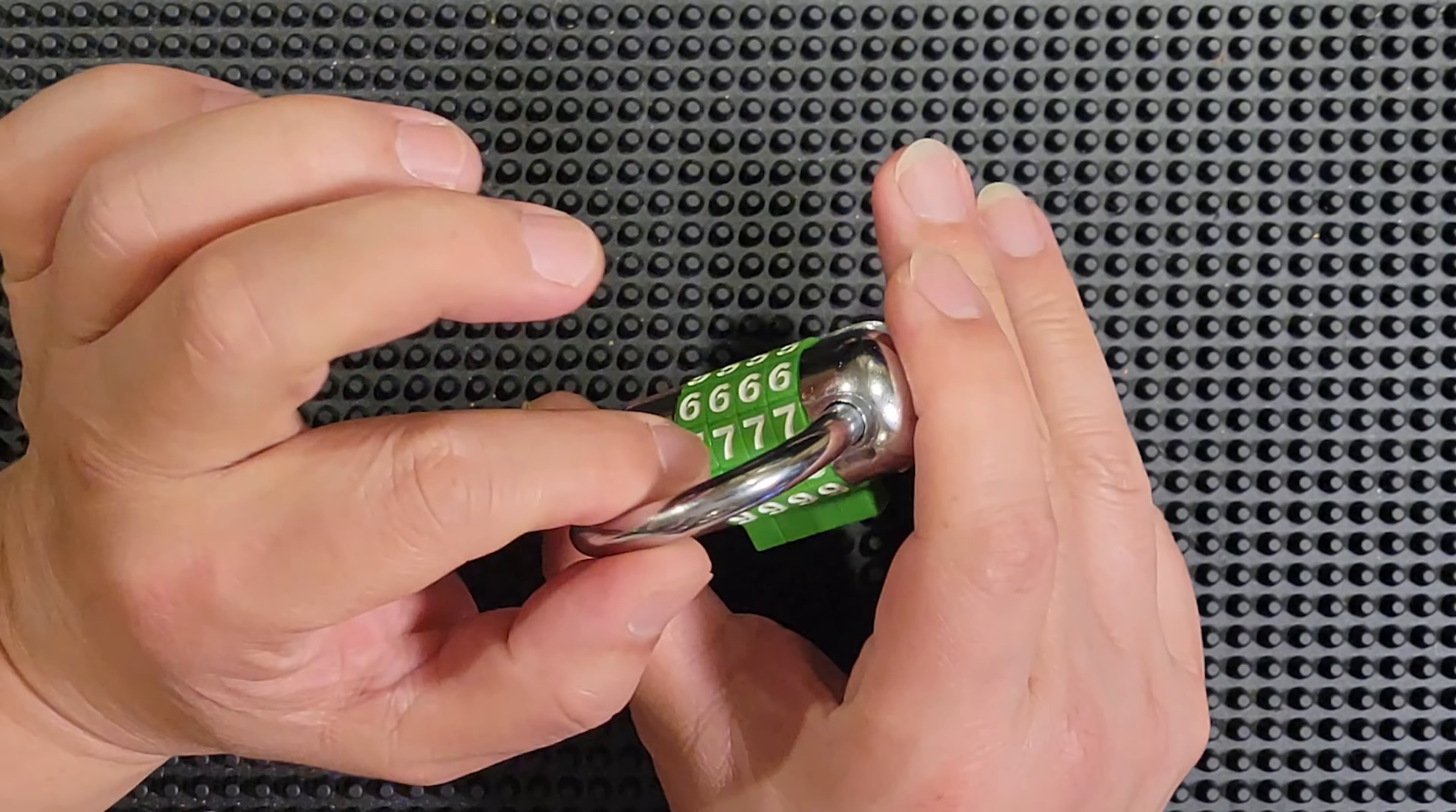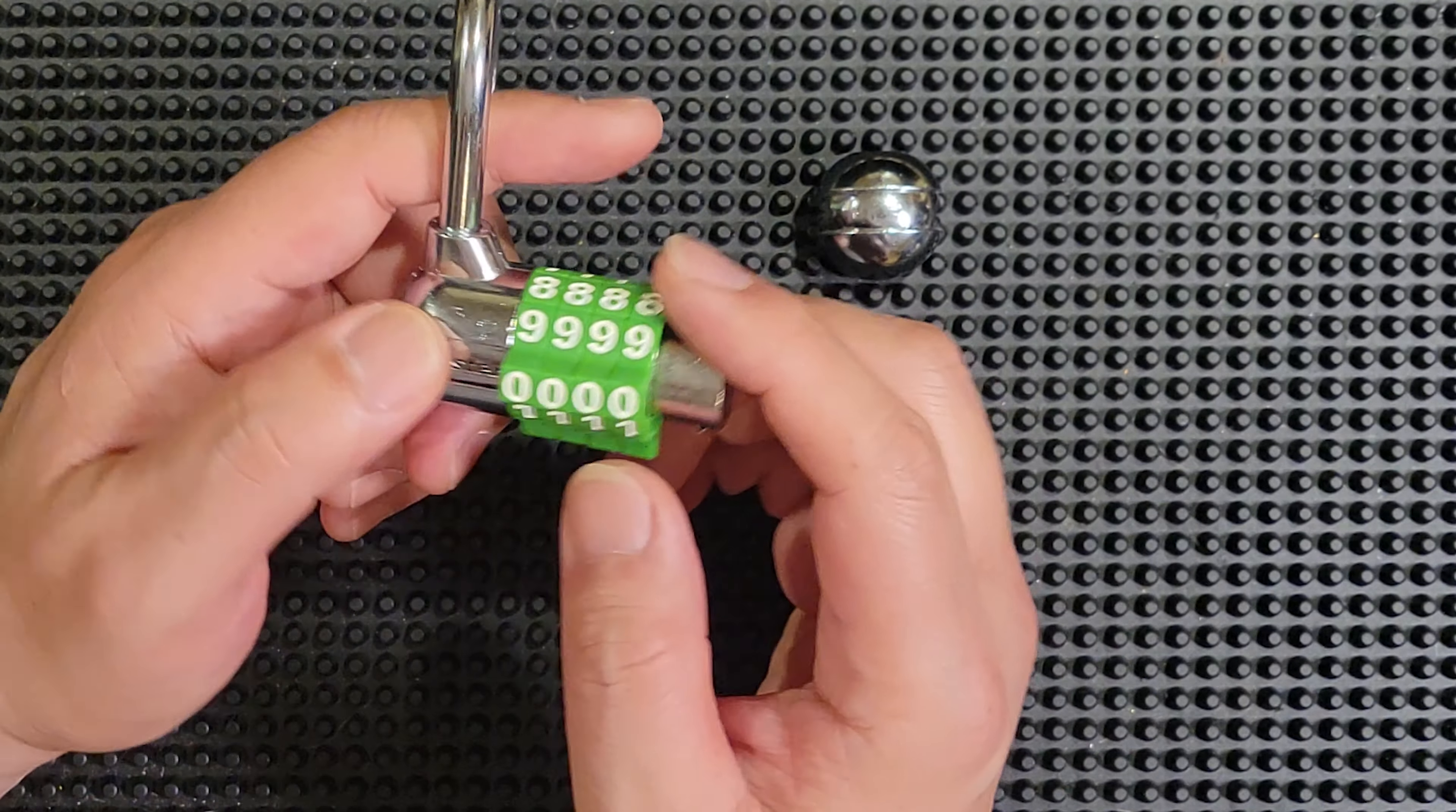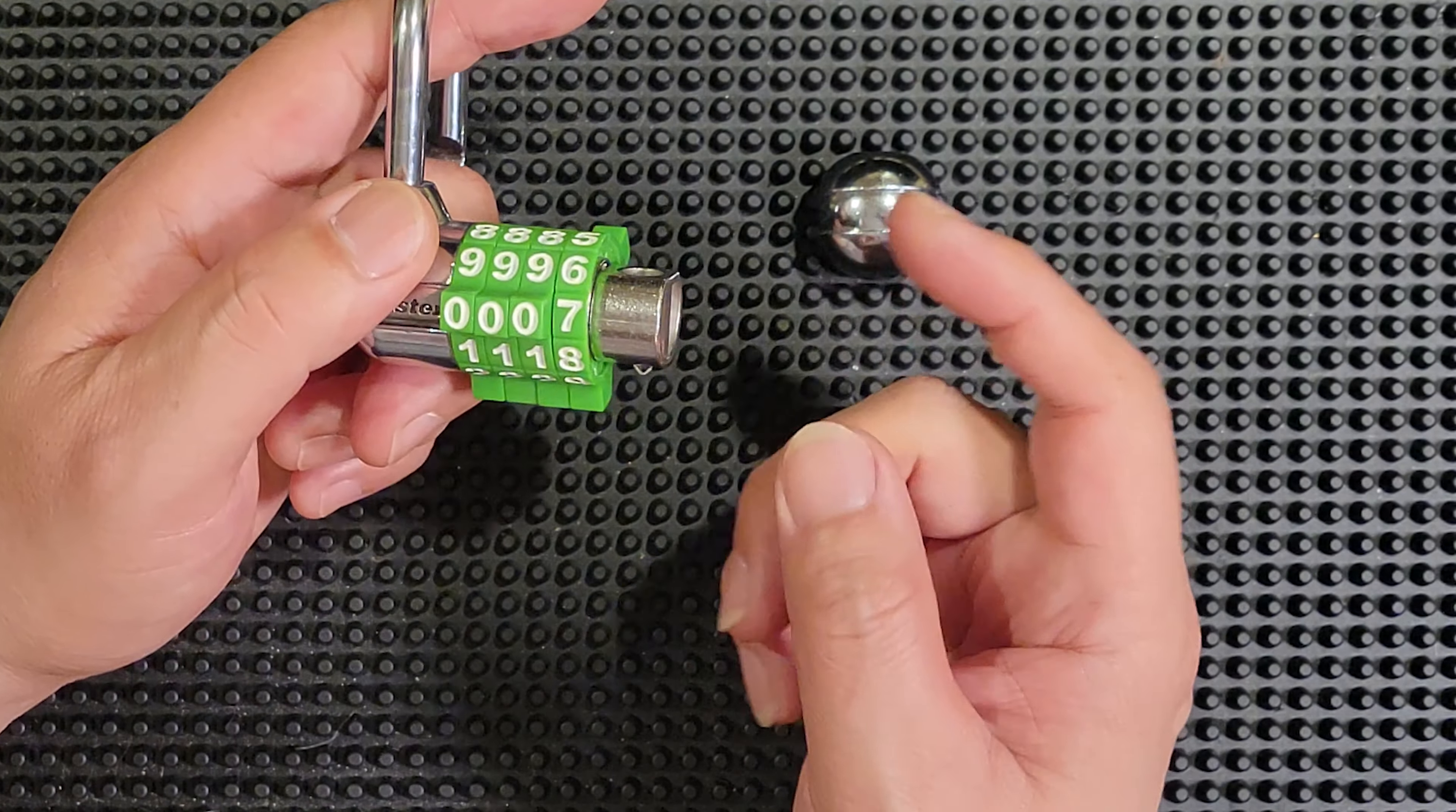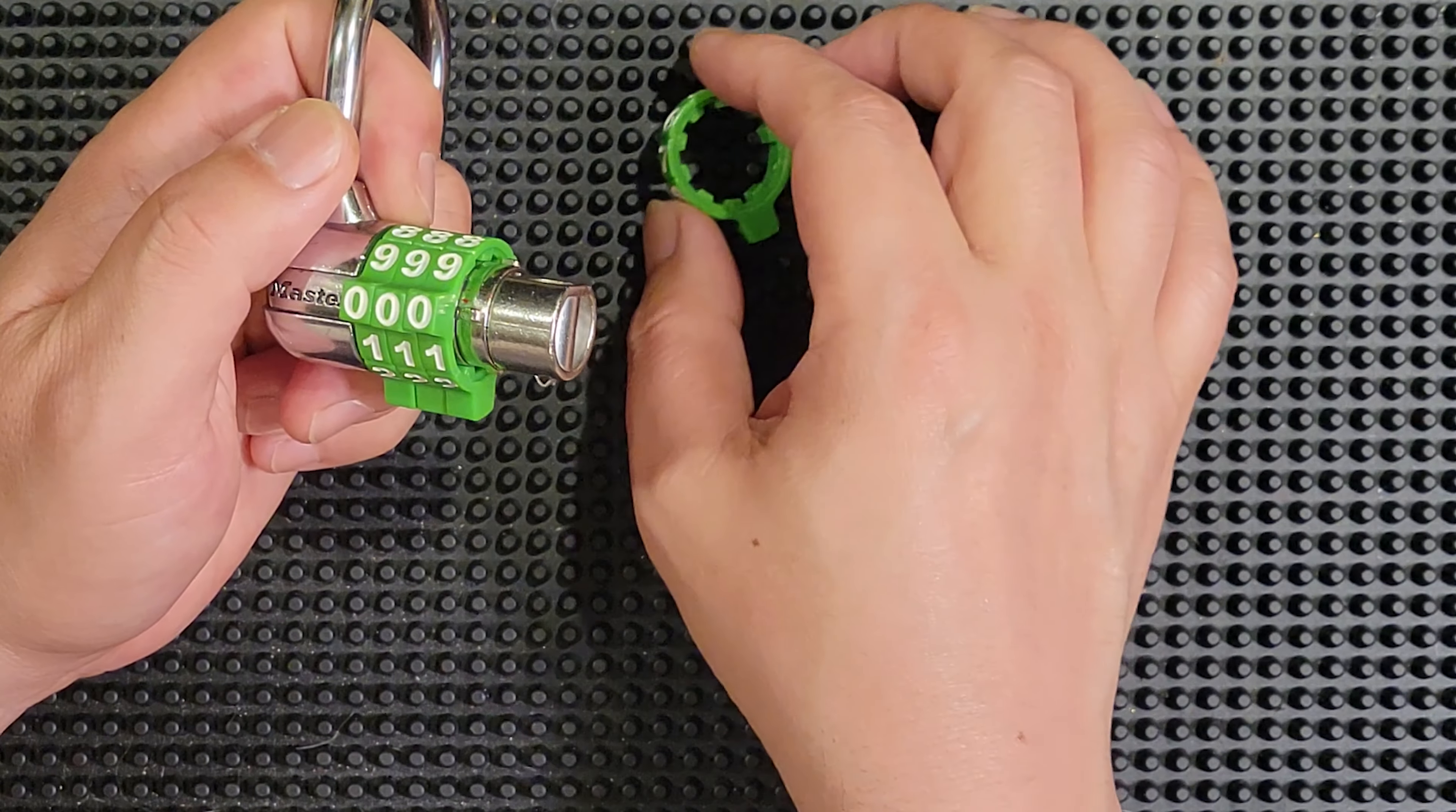Okay. These are recodable. And the way you recode them is by pulling off the end cap here. And then the number wheels just slide right off, and then you can turn them and reassemble it with whatever number you want facing up or in line with the master logo here. So, that's how you recode these. These are very easily recodable.